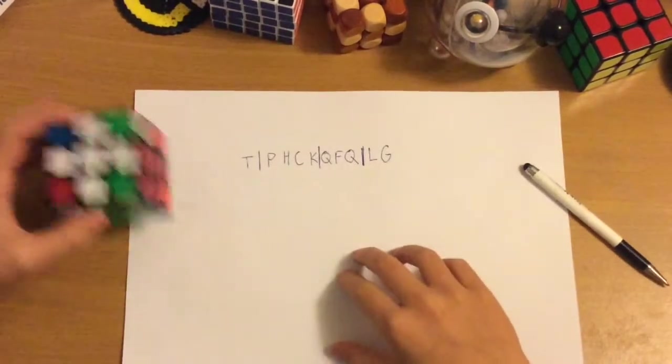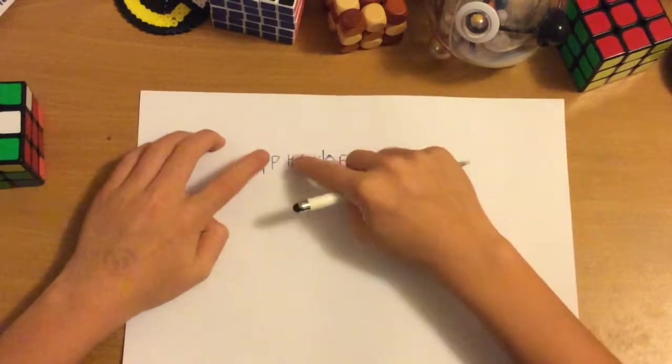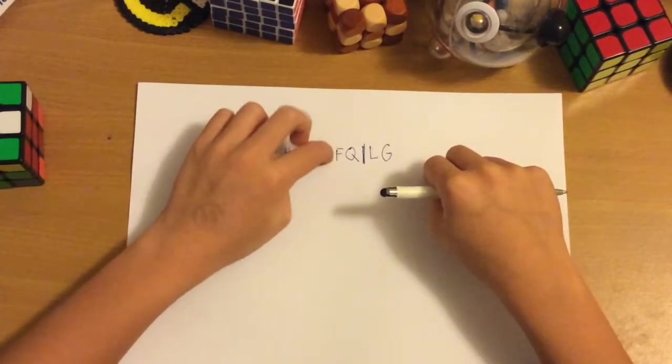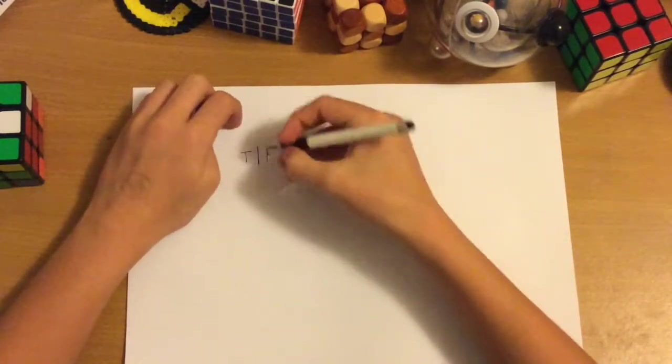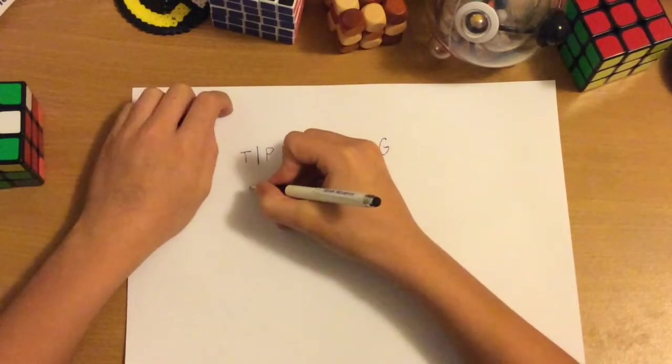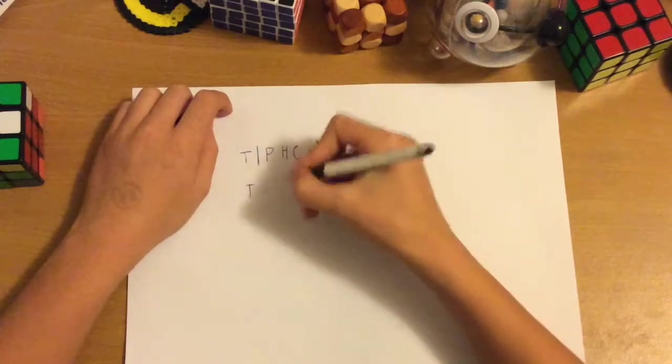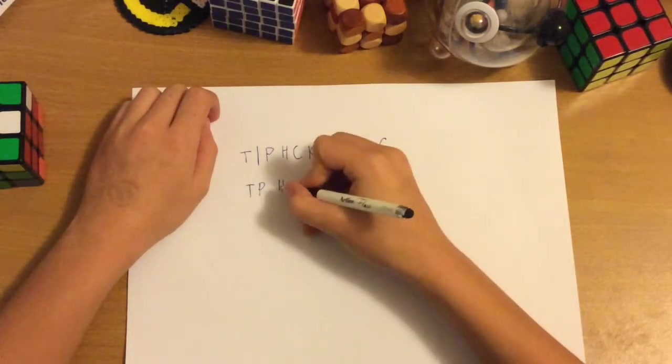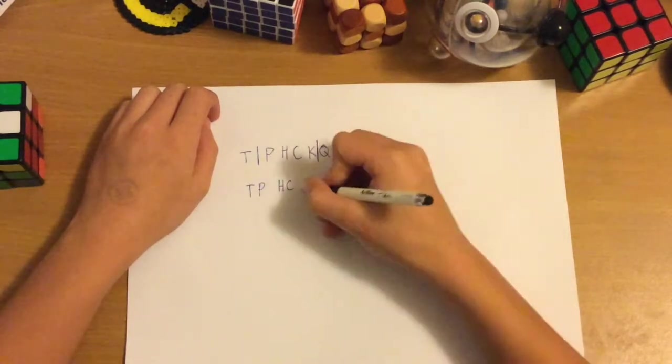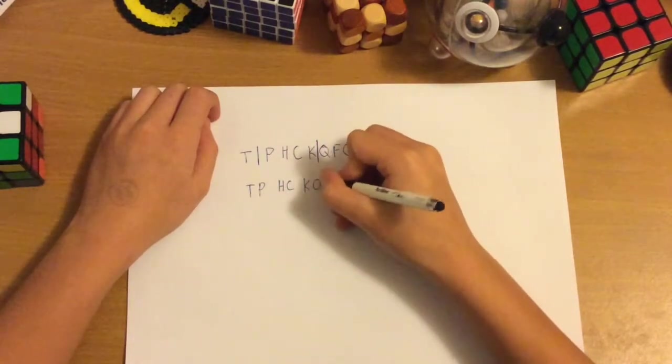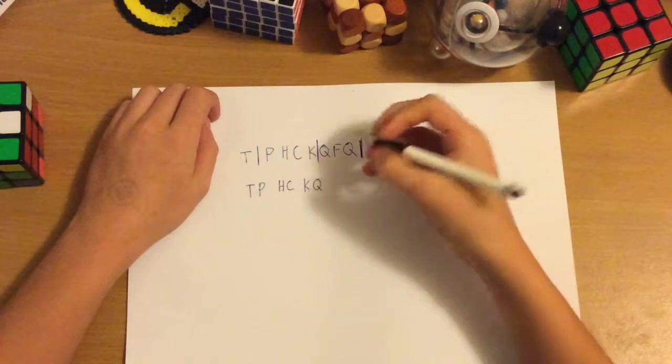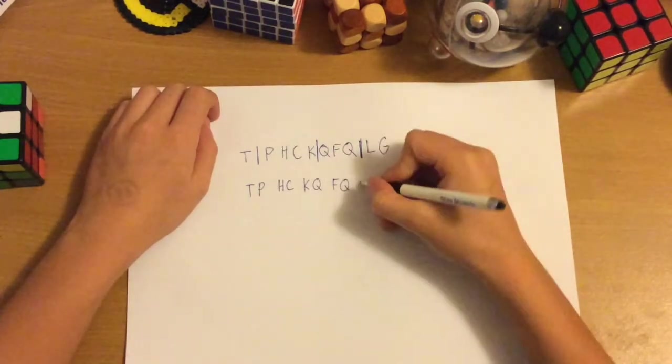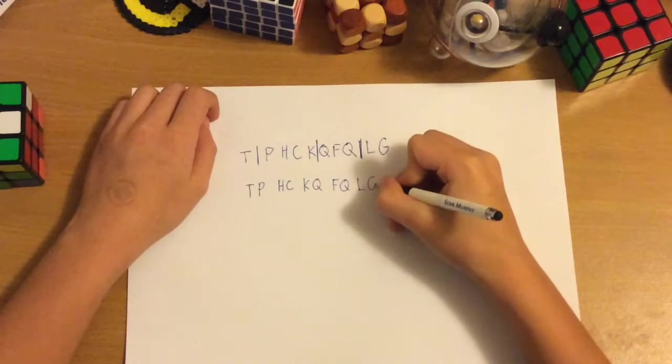So, this right here is what our memorization is. T, P, H, C, K, Q, F, Q, L, G. So, now let's put it into pairs. So, T, P is one pair. H, C is another. K, Q is another. And F, Q is another. And L, G is another.